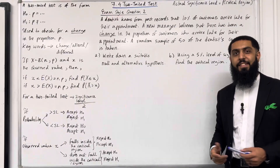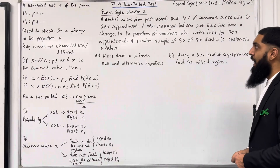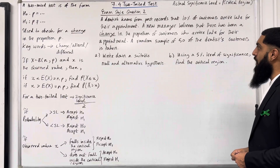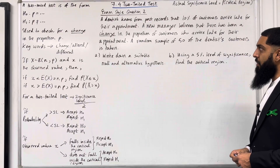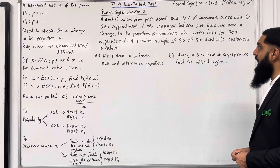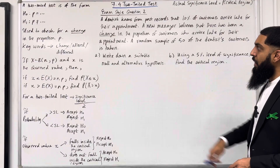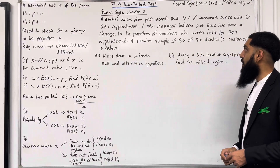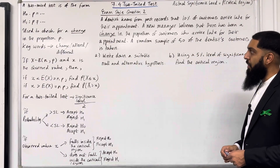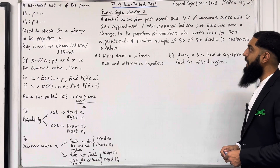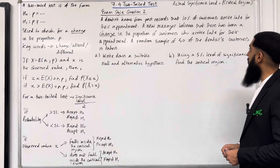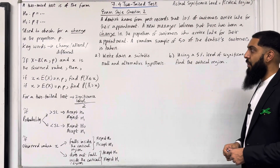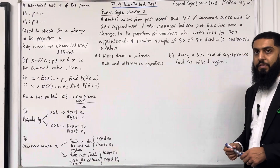Exam-style question 2: A dentist knows from past records that 10% of customers arrive late for their appointments. A new manager believes that there has been a change — indicating a two-tailed test — in the proportion of customers who arrive late. A random sample of 50 of the dentist's customers is taken. Part A: write down a suitable null and alternative hypothesis.